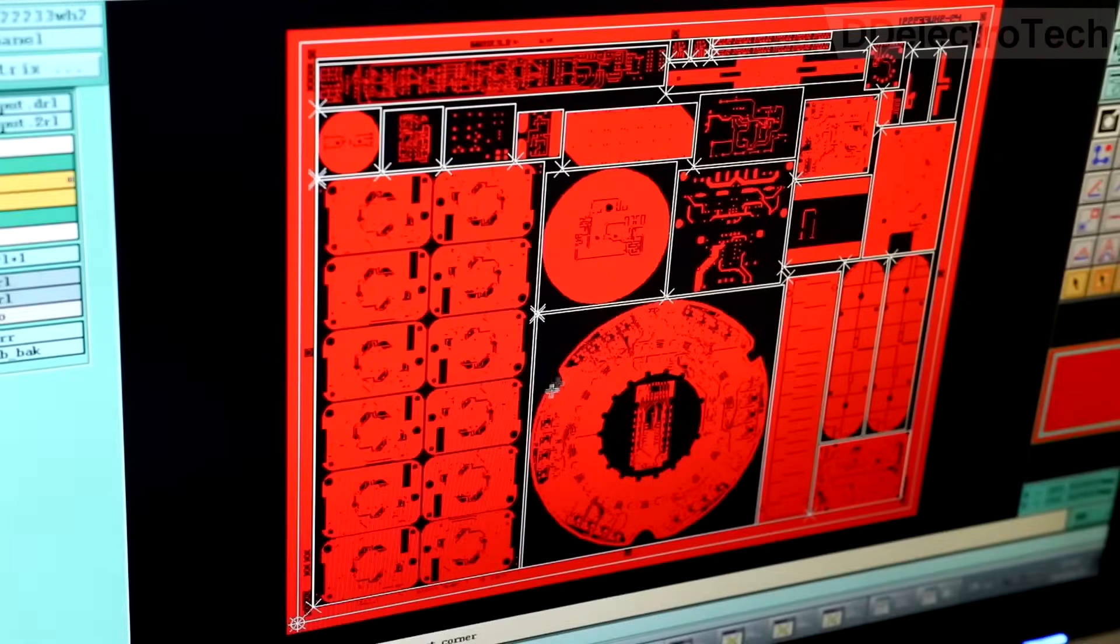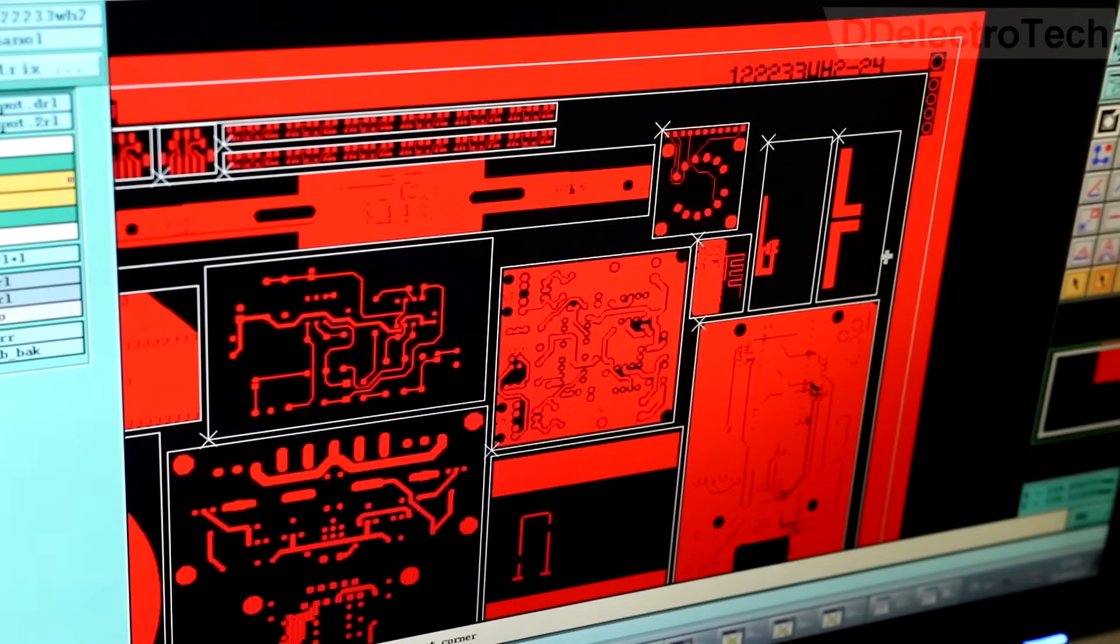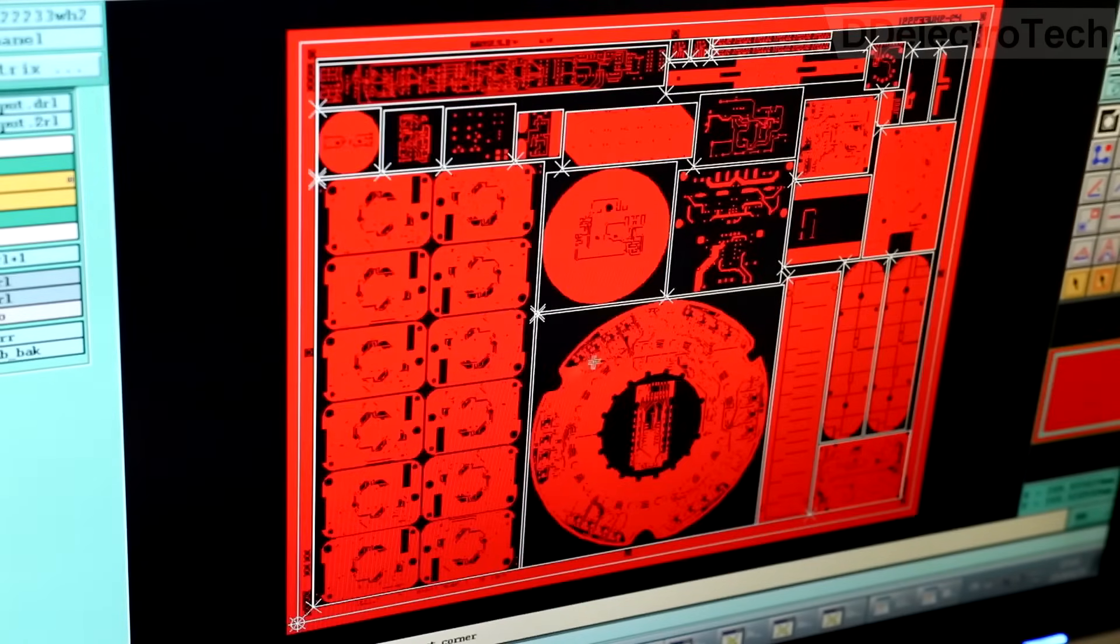After checking several circuits, they combine them on a large production panel, which is much more efficient to handle through the factory, thus the production cost also decreases.